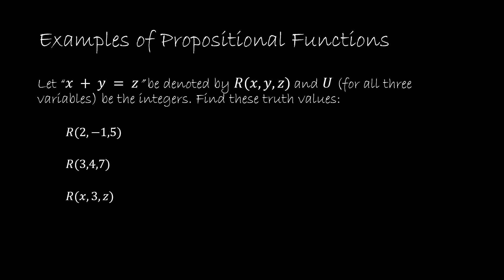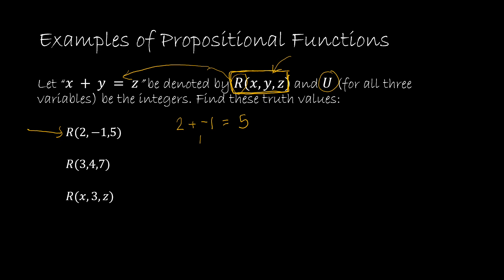Let's take a look at an example. We have a propositional function r(x,y,z), where r is the predicate representing the relationship x plus y equals z. x, y, and z are the variables, and u, the universe, is the domain — in this case the integers. Right now this is a propositional function. Once I give x, y, and z each a value, it becomes a proposition with a truth value of true or false. Replacing x with 2, y with negative 1, and z with 5: 2 plus negative 1 is 1, which does not equal 5, so this has a truth value of false.